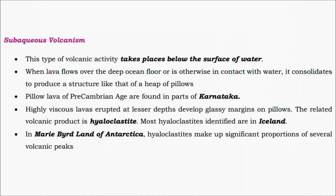The next type is subaqueous volcanism, where volcanic eruptions take place below the water surface. The lava cools under water, giving rise to a shape similar to a heap of pillows — called pillow lava. This can be observed near the Arabian Sea off the Karnataka coast, mainly from the Pre-Cambrian age. The surfaces of these pillow lavas are covered by a glassy layer, so they are called hyaloclastite, mainly found in Iceland.